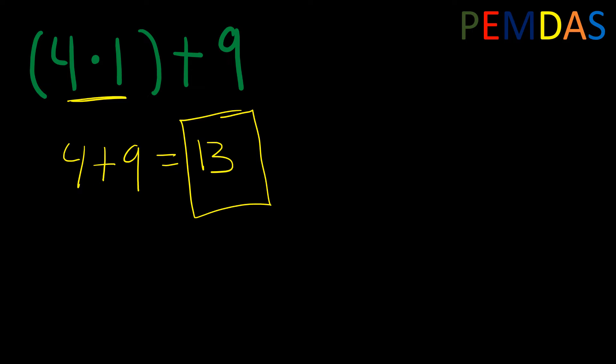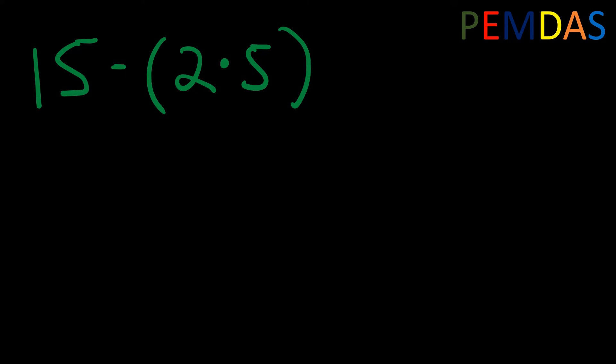Let's do another problem. Let's say we have 15 minus (2 times 5). According to PEMDAS, we're going to start within the parentheses first. So the first thing we do is 2 times 5, which is 10. So we rewrite it as 15 minus 10. There are no exponents, no multiplication, no division, no addition — but there is subtraction. So 15 minus 10 is 5.